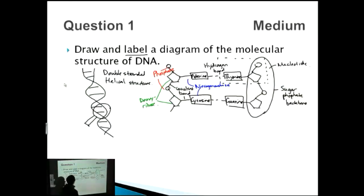Okay, so look, medium question, we want at least six points. Let's tick how many of the other points we've got. So we've got double-stranded, that should give us a point, helical structure. Very good.